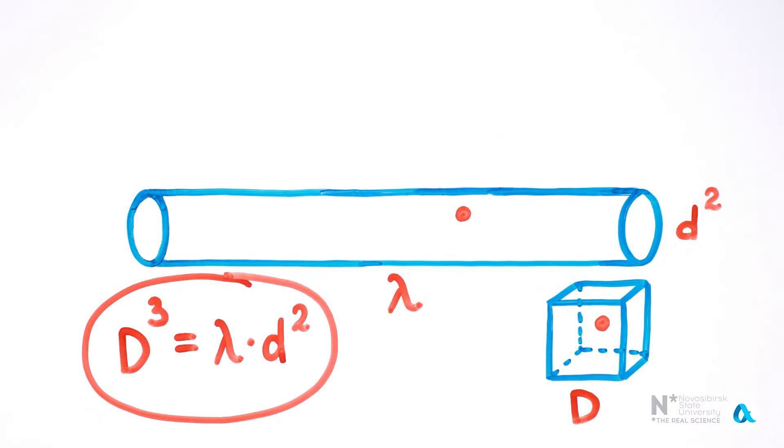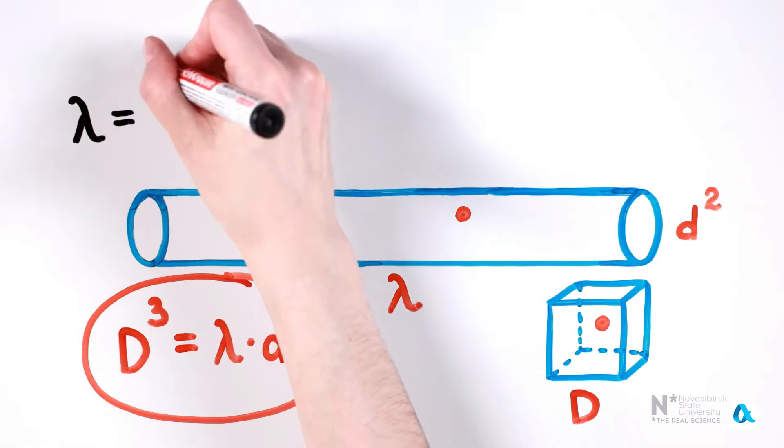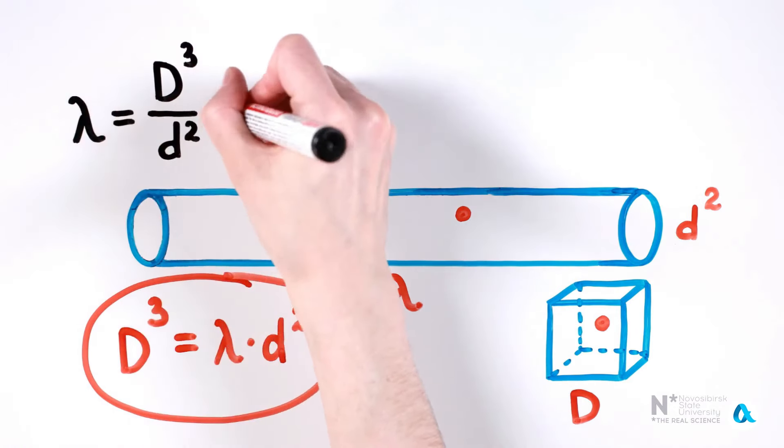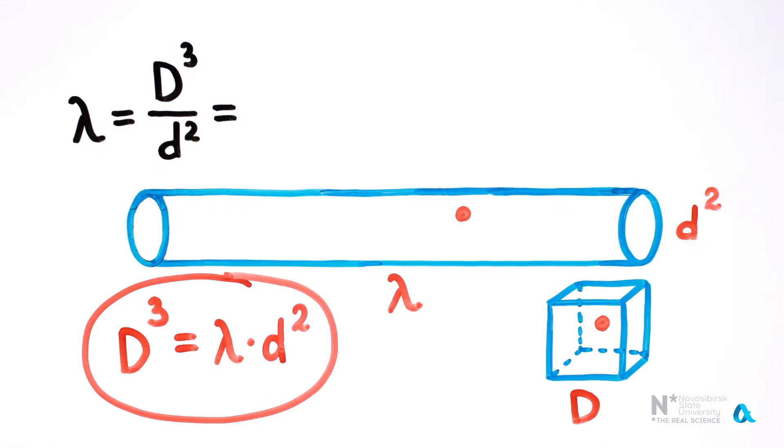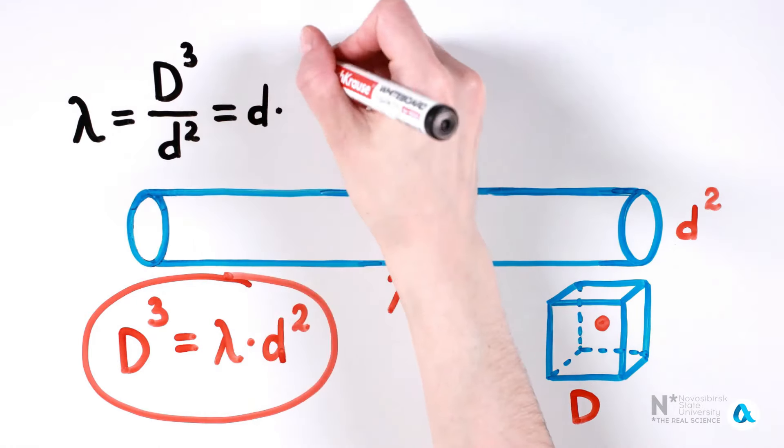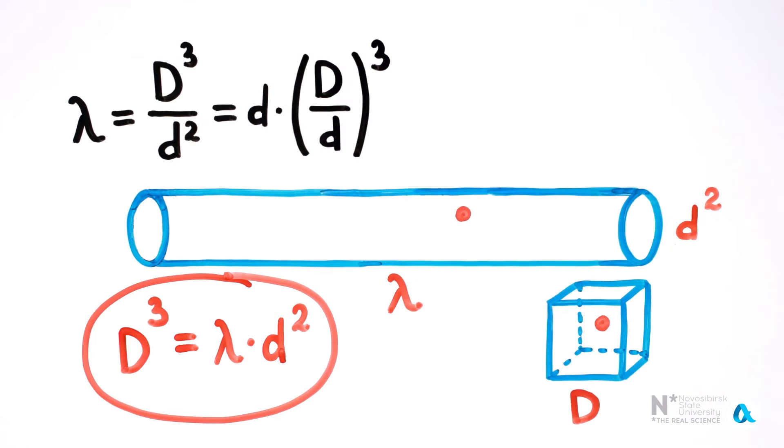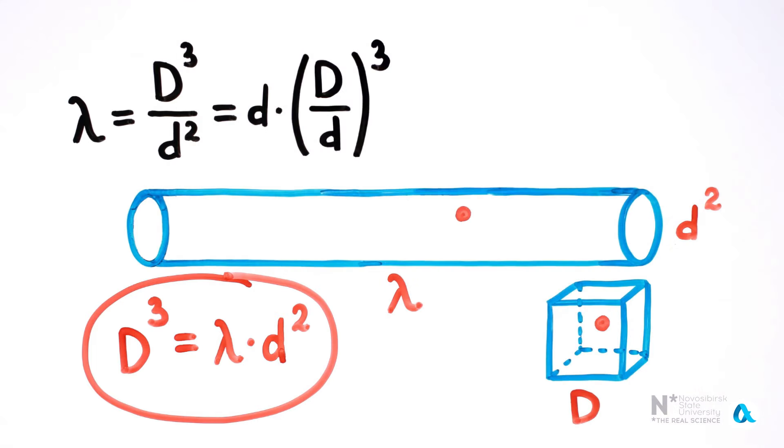Where does the mean free path lambda come from? This is d cubed divided by d squared, which is very conveniently to rewrite as the diameter of the molecule d multiplied by the cube of the ratio of d to d. And this is just the fraction of the volume that the molecules themselves occupy in the air.